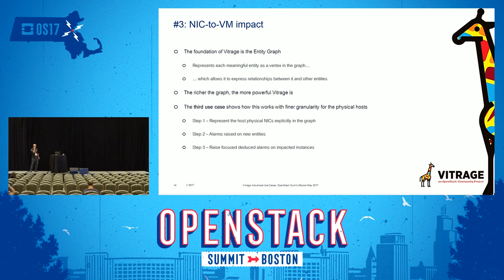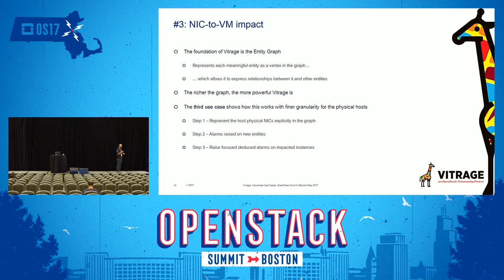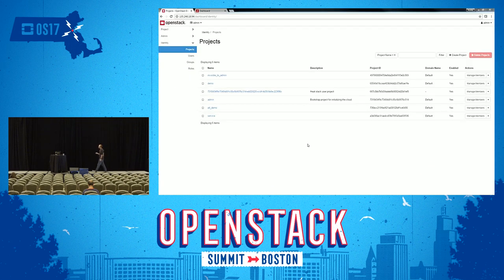The third use case is about network troubleshooting — specifically OVS NIC troubleshooting. We added to our system a script that discovers the OVS topology and integrates it into the entity graph in Vitrage. This gives us a correlation between the physical layer and the virtual layer of the network, and we'll show how it extends the power of Vitrage. I'm going to bring down the physical interfaces in the compute and see what happens in Vitrage.